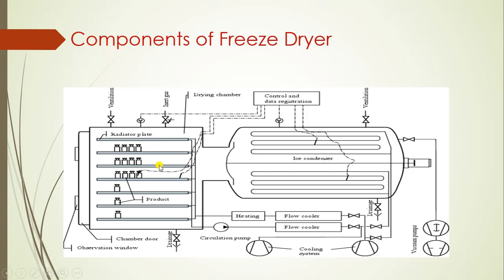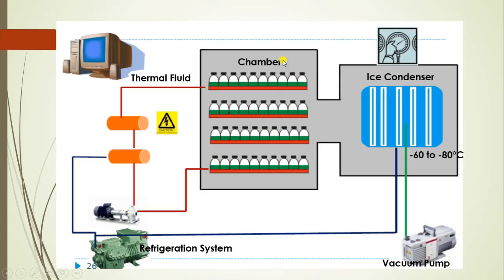This is the cells on which the product can be placed. Here it consists of a heating system or heating of the heat transfer fluid. This consists of a pump. This is the condenser which can be cooled by refrigerant. The vacuum pump maintains pressure inside of the condenser. This is also a diagram for the freeze dryer — showing the ice condenser and vacuum pump attached to it to maintain the pressure.